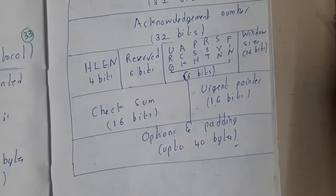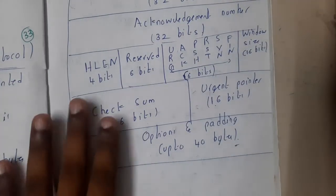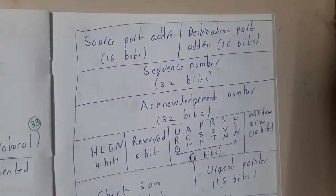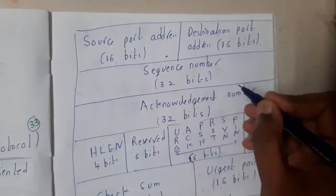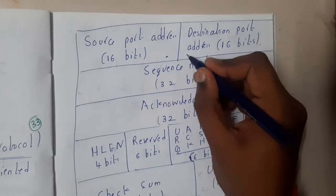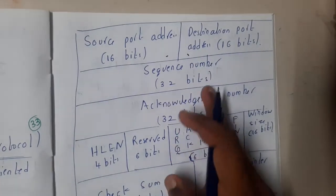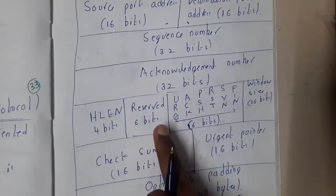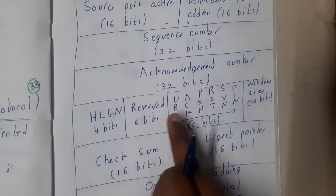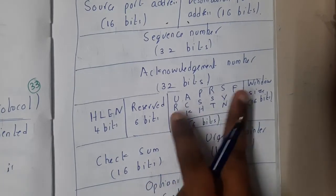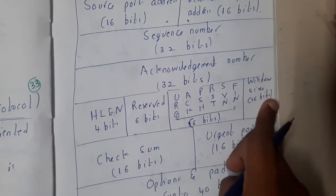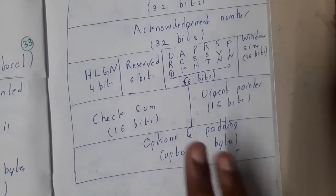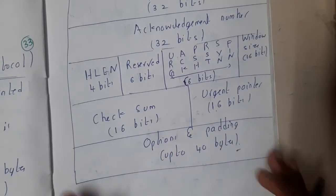The TCP header fields are: source port address, destination port address, sequence number, acknowledgement number, header length, six reserved bits, some pointers, window size, checksum, urgent pointer, and then options and padding.